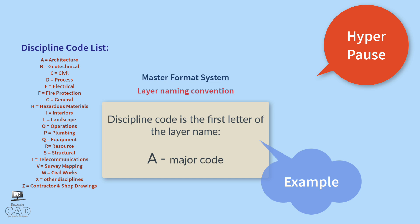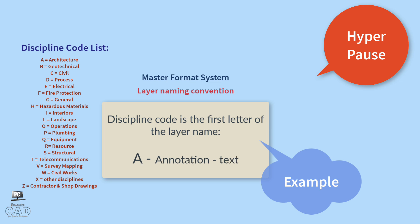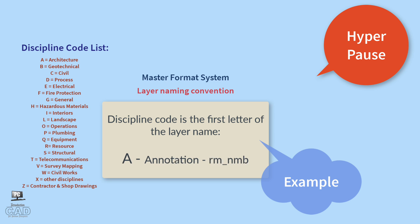Following the discipline code, add a hyphen and then the major code denotation. The major code is the general category which describes the layer information — for example, 'annotation' defines a broad category. Following the major code is another hyphen, followed by the minor code, which further defines the layer. In this case, the minor code is 'text.' There are many minor codes that can be applied to an annotation type major code, such as text, dimensions, symbols, room identification, room numbers, and signage.